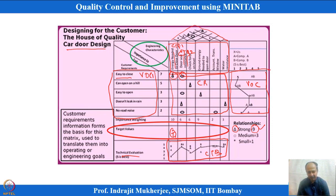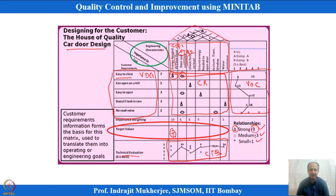Relationships can be given a scale — strong is rated 9, medium is rated 3, and weak or low relationship is rated 1. The relationship can also be positive or negative in direction.